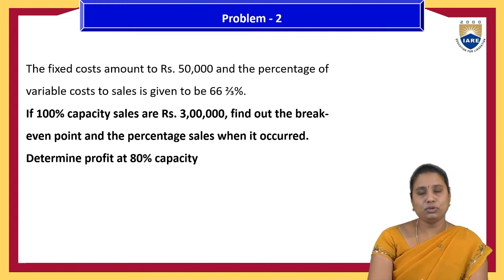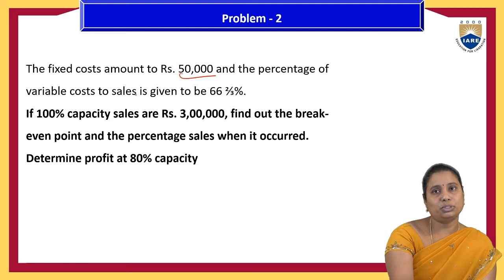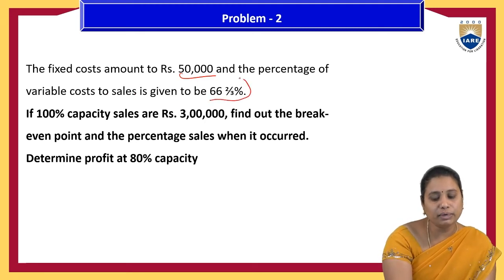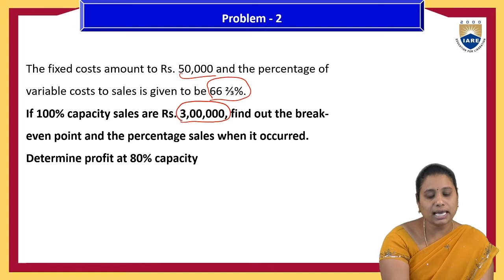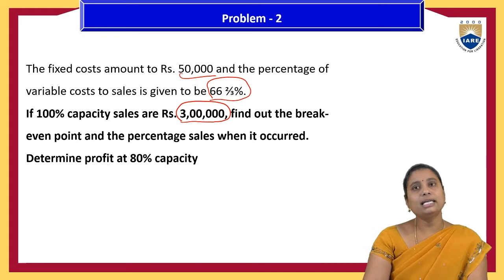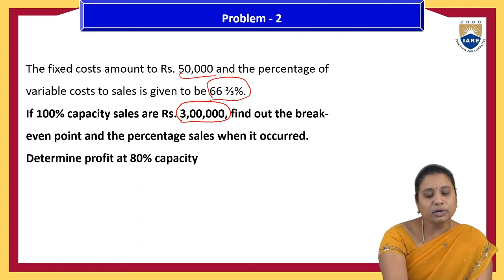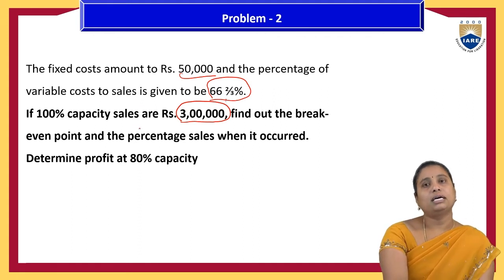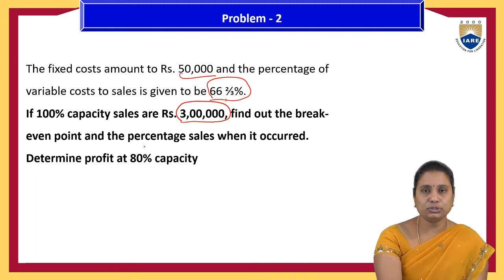In this problem, fixed cost is ₹50,000, percentage of variable cost to sales is 66⅔%, and if 100% capacity sales are done, that is equivalent to ₹3 lakhs. Find the break-even point, the percentage of sales at which it occurs, and determine the profit at 80% capacity.